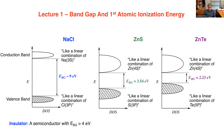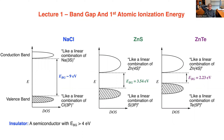We showed this example of sodium chloride, zinc sulfide, and zinc telluride, and said that you can make a guess as to the size of the band gap based on the ionization energy and the electron affinity of the atoms involved.